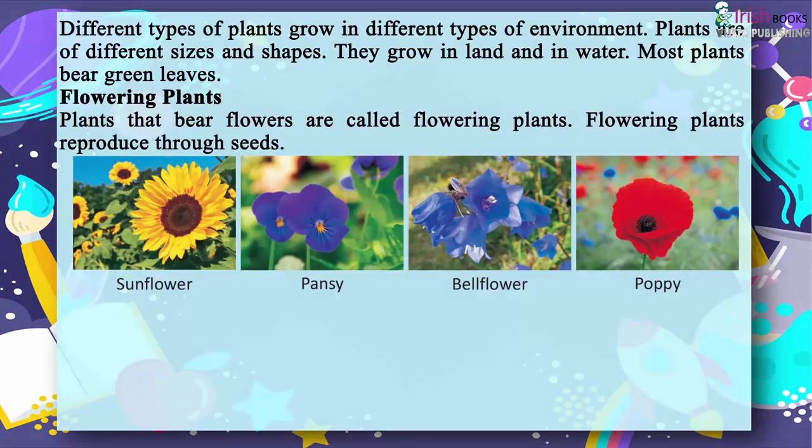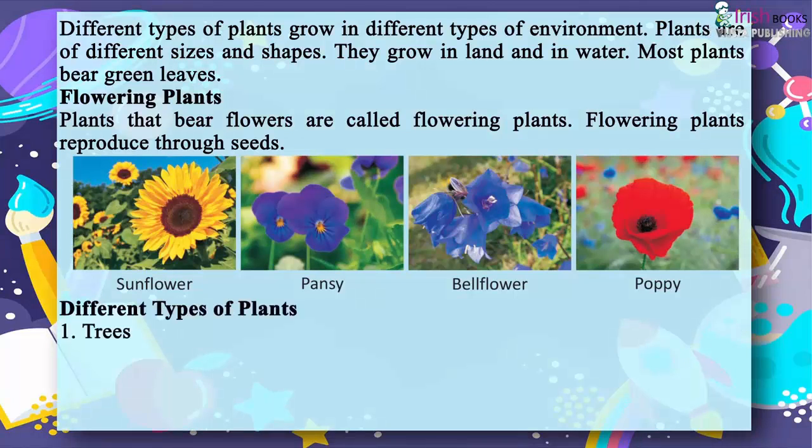Examples of flowering plants: Sunflower, Pansy, Bellflower, Poppy.